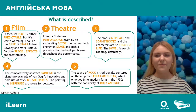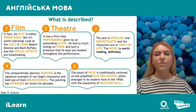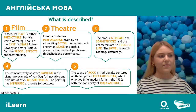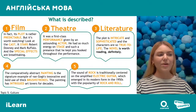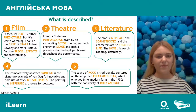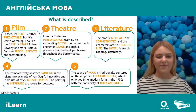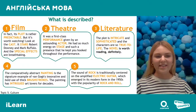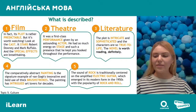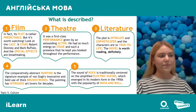Number three. Some words like 'intricate', 'sophisticated', 'true to life'. And the key word here is 'novel' — roman. Yes, it's about books, it's about literature. Number four is really easy because you have the word 'painting' (картина). Also we have 'brush strokes' (мазки пензлика). And that is about art.